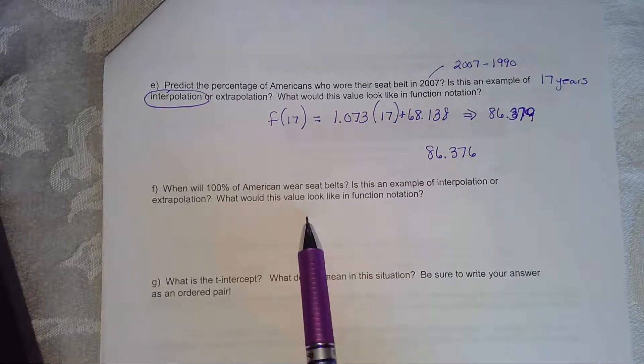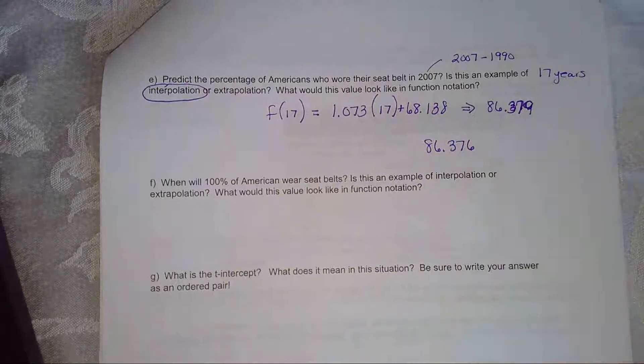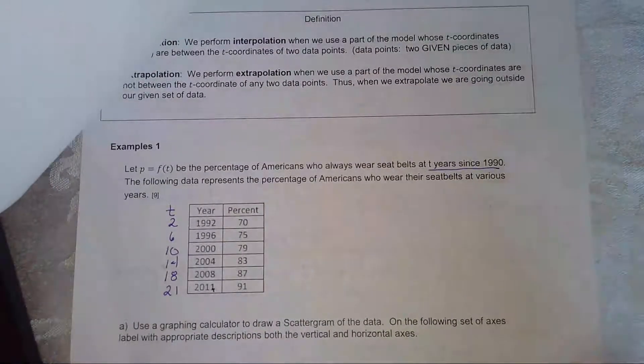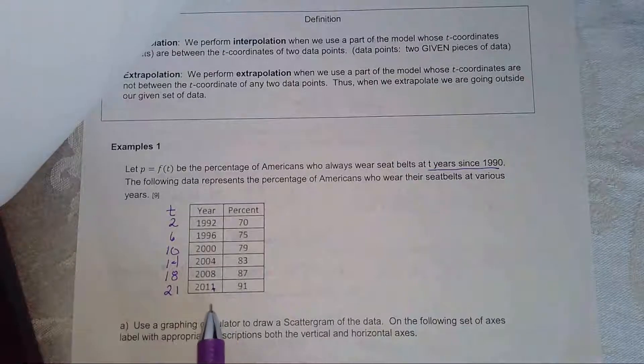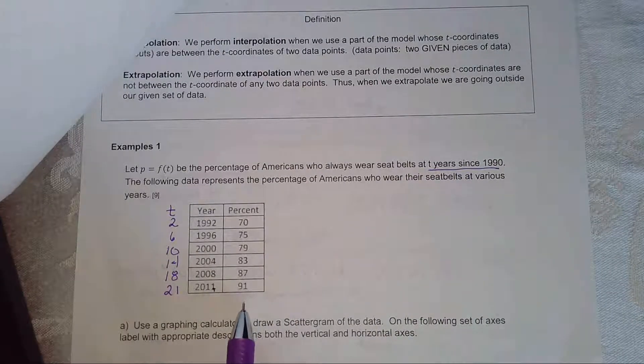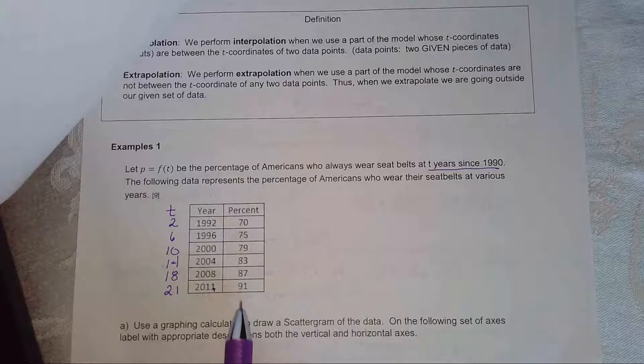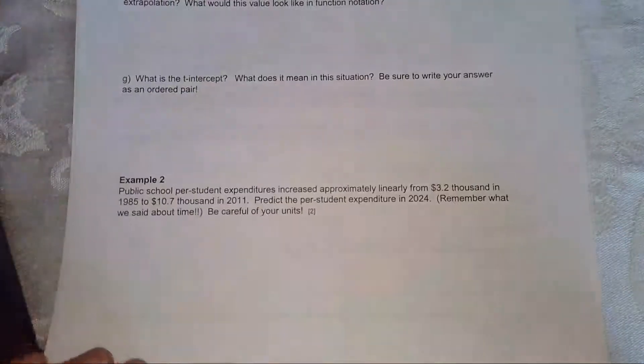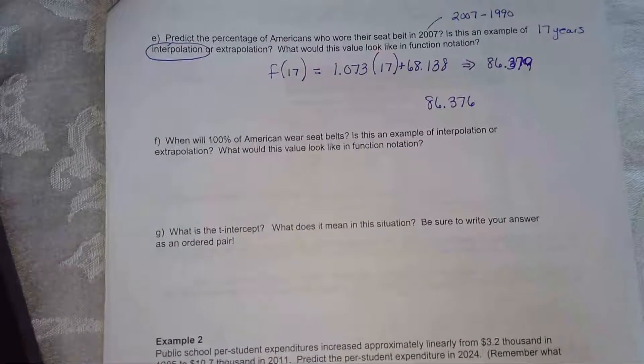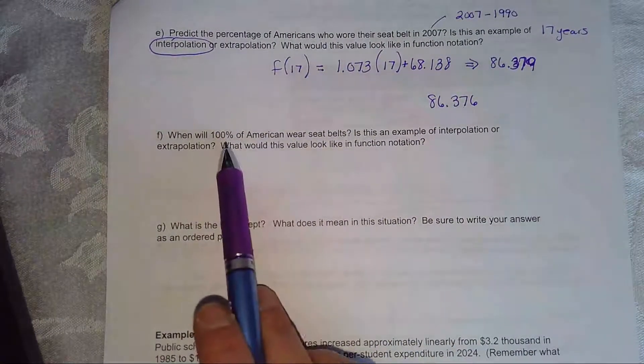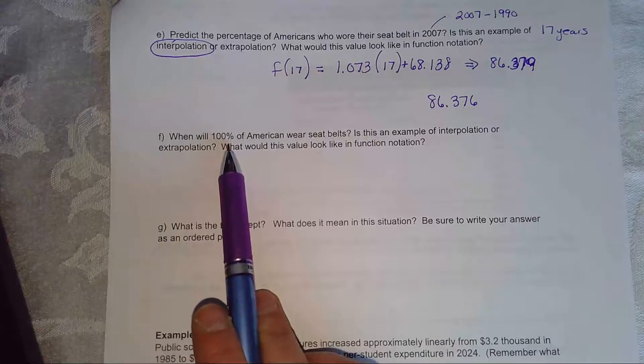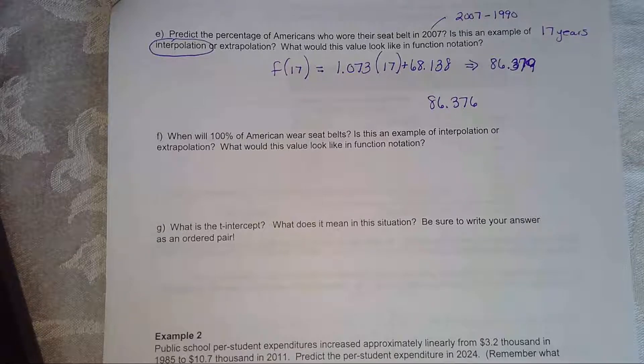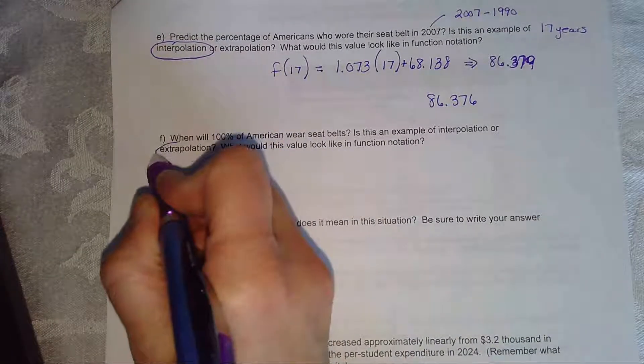Now when they ask about a hundred percent of Americans wearing seatbelts, well, if you look at our data, it looks like we're going to have to extrapolate that. We are way outside the bounds of our data. This only goes up to 91 percent. And we're going to go outside the bounds of our data and make a prediction about the future. And I'm thinking this is going to be model breakdown because chances are likely that not every single American is going to be wearing a seatbelt in a given year. But let's go ahead and calculate it. First of all, it's extrapolation.